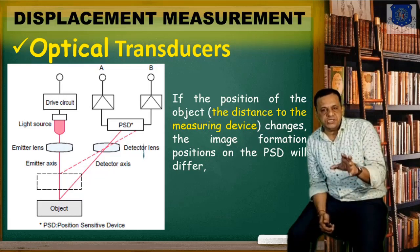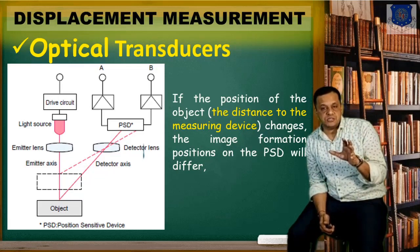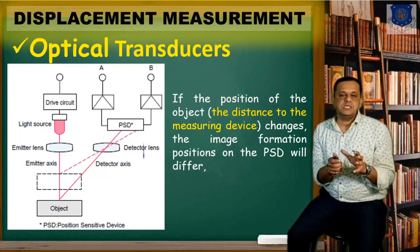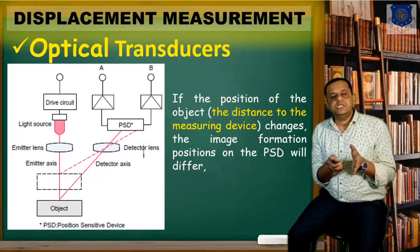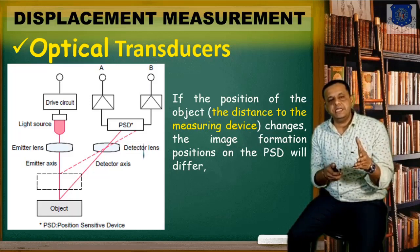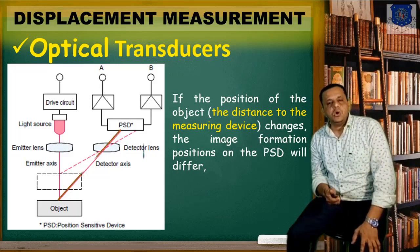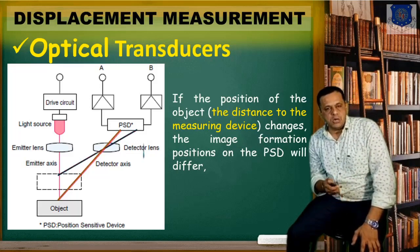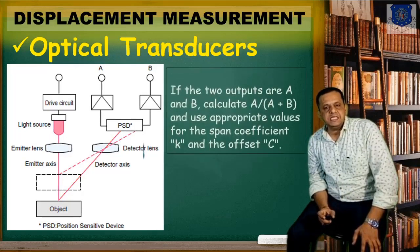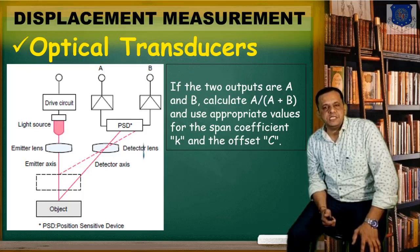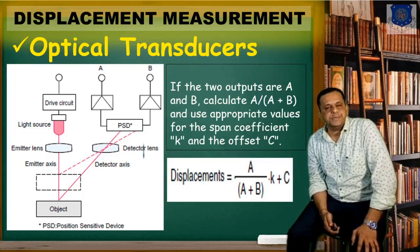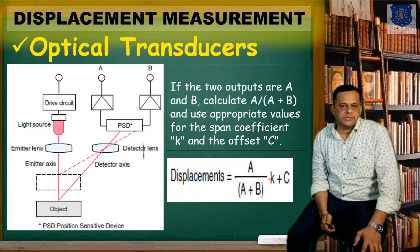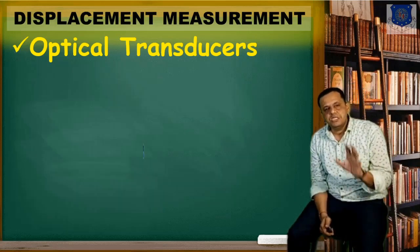If the position of the device is changed, then the image formation on the PSD will differ based on the angular position of the object and the reflected light. With two outputs A and B, the displacement is calculated using a scale coefficient K and offset C. The formula is: Displacement = (A / (A + B)) × K + C. This is the formula to remember for displacement measurement.